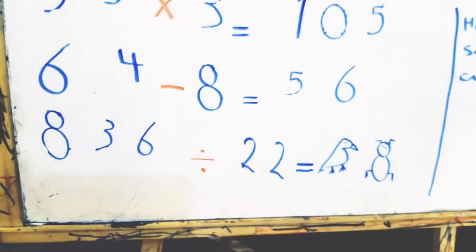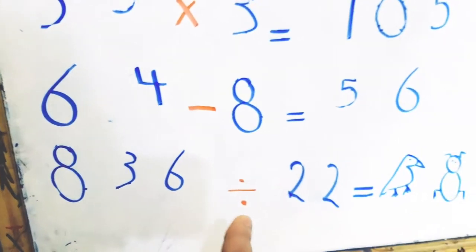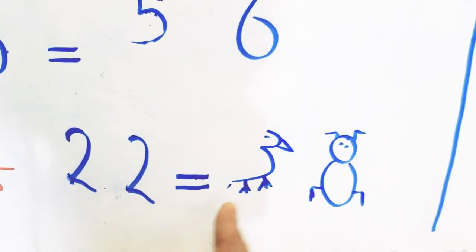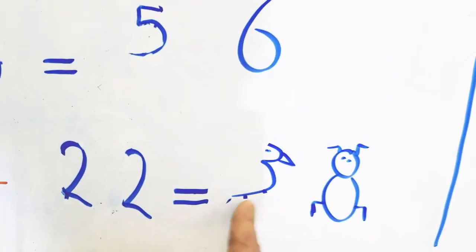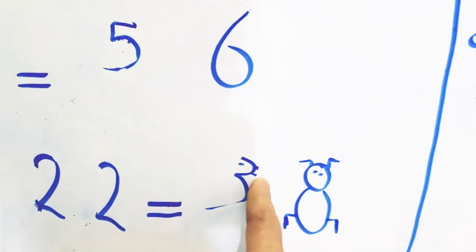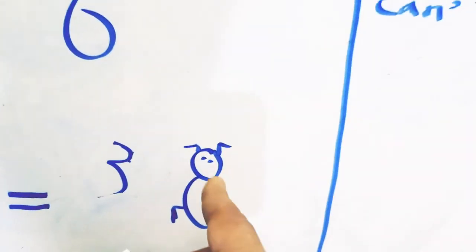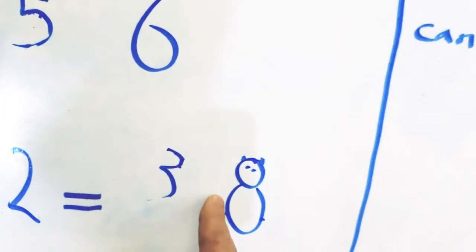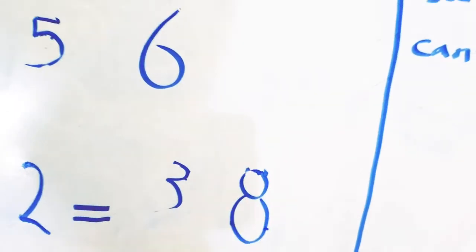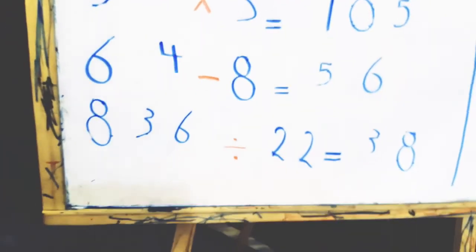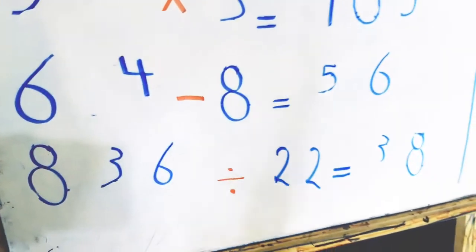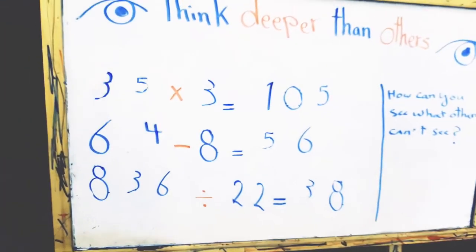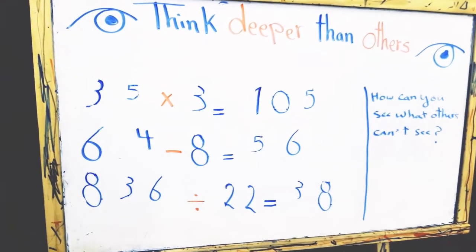Now we have 22. So 836 divided by 22 equals... we must clear out or delete some parts of this drawing. We have three here, and this petal — we must clear out or delete some parts of this petal in order to turn it into a digit. So we have 38. 836 divided by 22 equals 38.